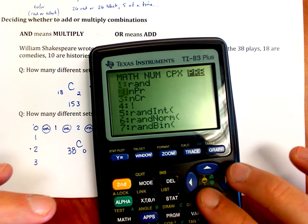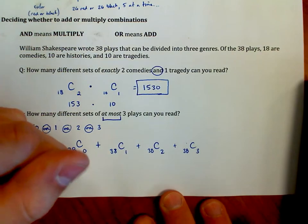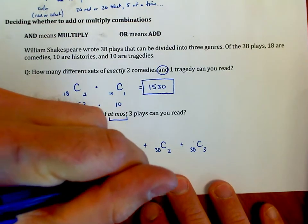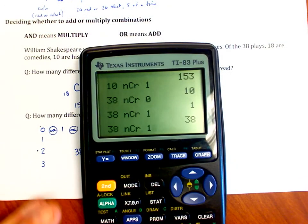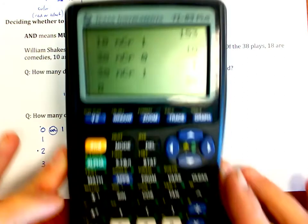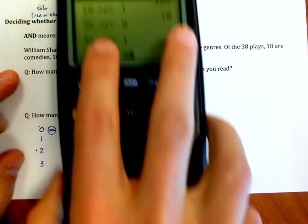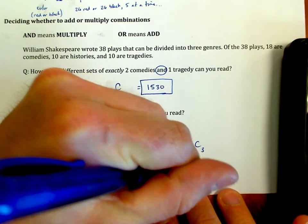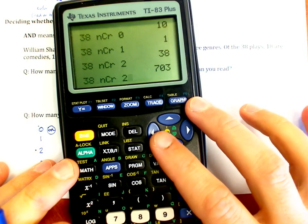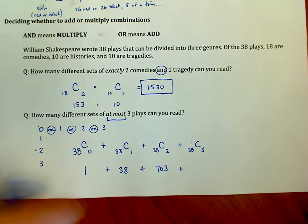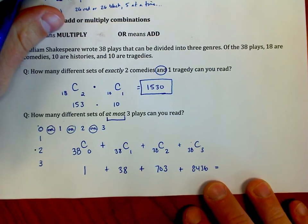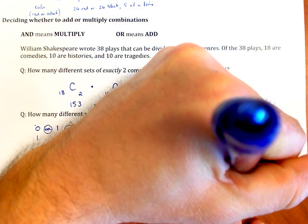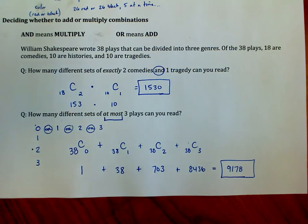38 chosen zero at a time. This is one. I'm going to repeat it for one. This is 38. I'm going to repeat it. Oh, by the way, you want to know how I entered that so quickly? Okay. All I have to do is I hit second, and I hit enter, and it says bring up the last thing that I entered into the calculator. And now I can just go back and change that one to a two. Right? 38 NCR 2 is 703. And then I do second, and I hit enter, and it brings up the last command line. I change that to a three. It's 8436. So when I add all of these values together, 8436 plus 703 plus 38 plus 1, it turns out that there are 9,178 different sets that involve anywhere from 0 to 3 of his plays.